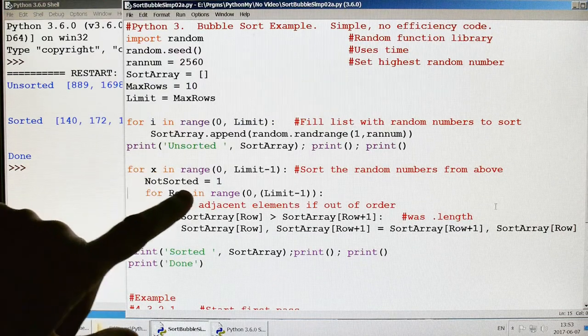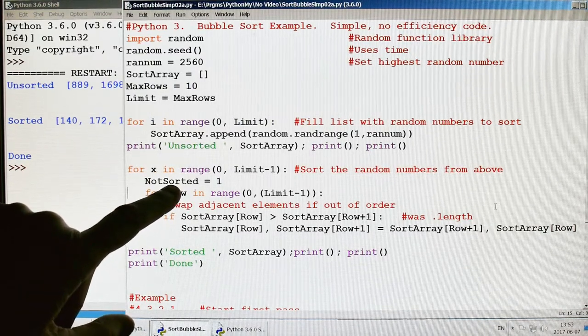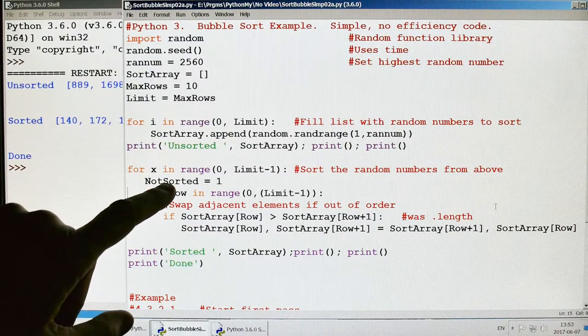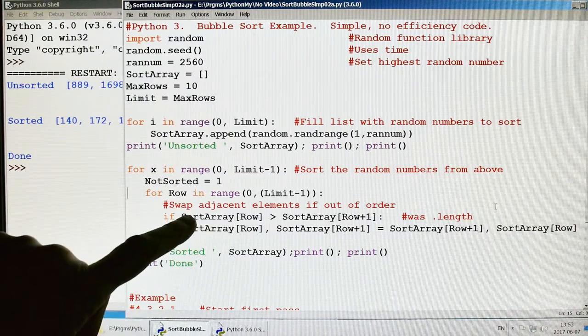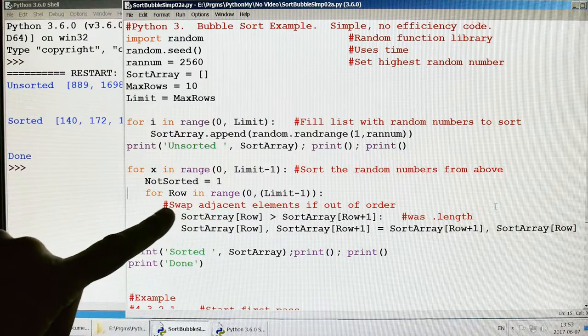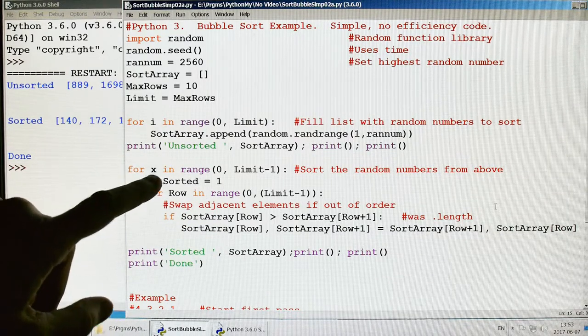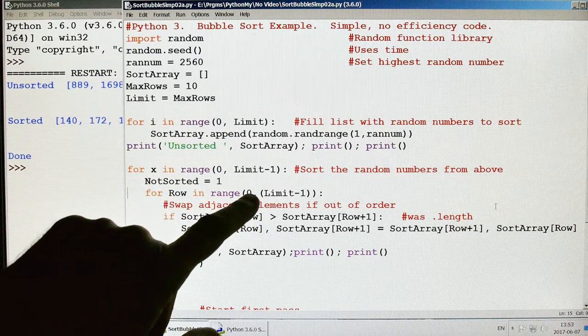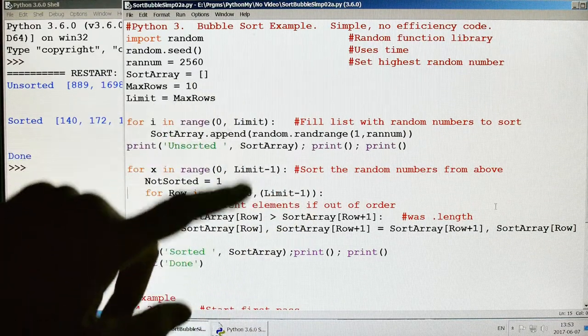We've got the outer loop and then we've got this sort flag. And what happens is it'll come back up here. It'll see if the sort flag has been set and if not, it'll continue to execute this loop. We get our not sorted flag equals one for row in range of zero to limit minus one. Limit was our number 10.